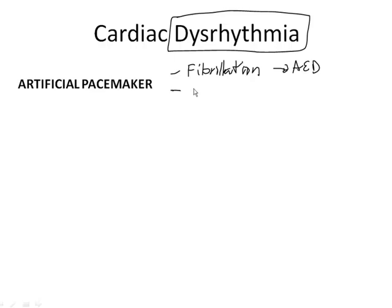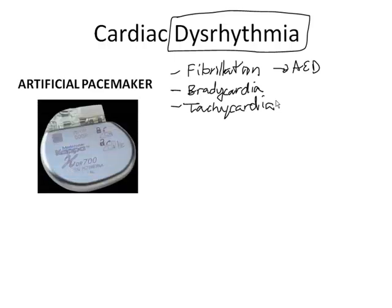You could also have just a really slow heartbeat called bradycardia, where your heart is beating less than 60 beats per minute. The other extreme is called tachycardia, where your heart is beating very quickly, sometimes over 100 beats per minute. If those conditions are consistently happening in an individual, they'll get a small implant that'll help the heart keep a beat.